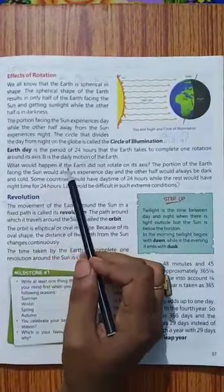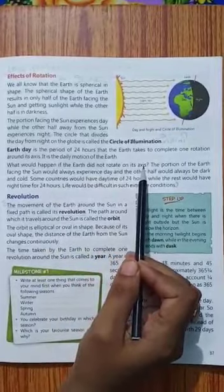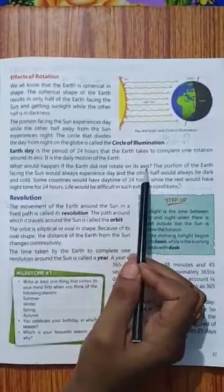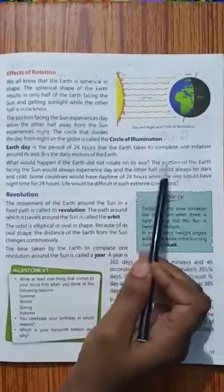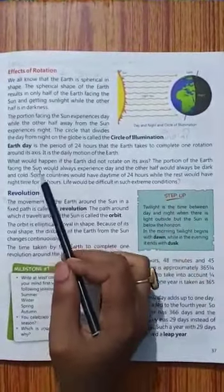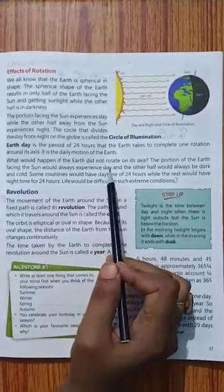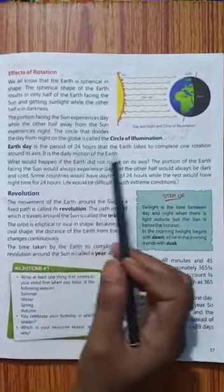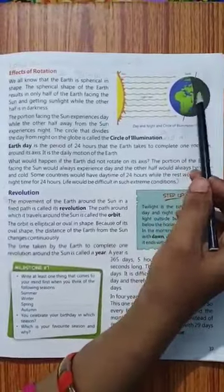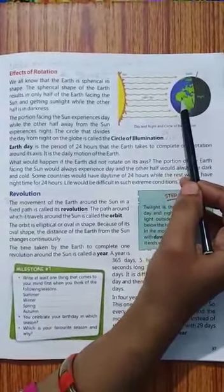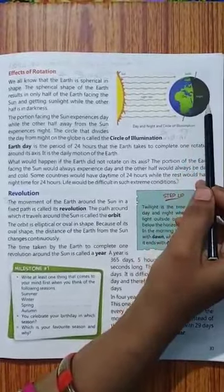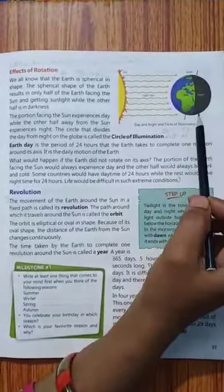What would happen if the earth did not rotate on its axis? Inh hoonne question kiya hai ki kya hooga? Ki earth agar rotate nahin karegi apne axis peh, toh kya hooga? The portion of the earth facing the sun would always experience day and the other half would always be dark and cold. Jhaan per sif roshni pardegi, agar yeh apne axis peh rotate nahin karegi, toh jhaan per light rays hoongi, wahaan per sif day hooga. Or jhaan per light rays nahin aayengi, wahaan per sif or sif rath hoogi.